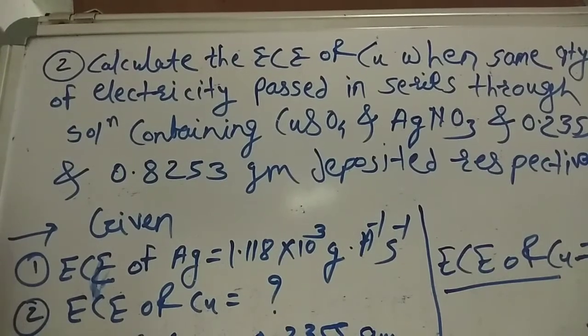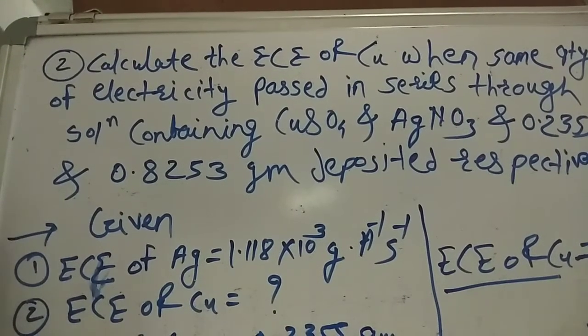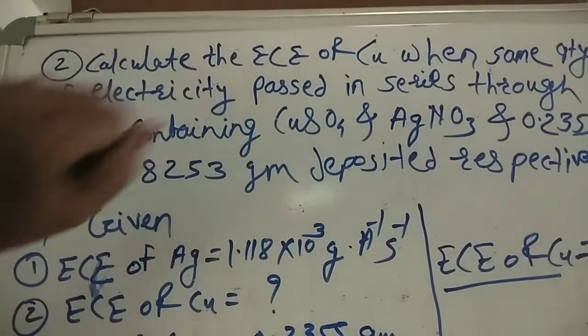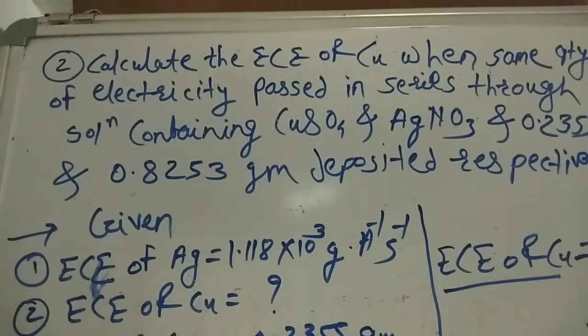In the first problem, we used Faraday's law directly. In the second problem, we found the electrochemical equivalence of copper using cross multiplication.